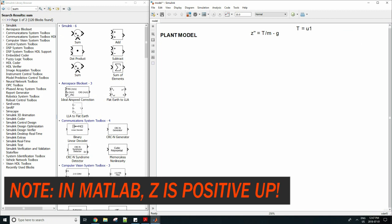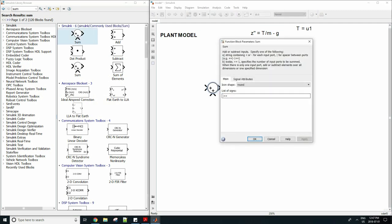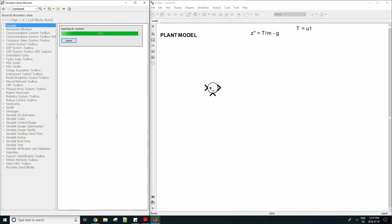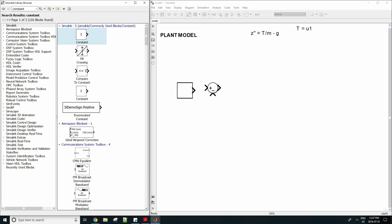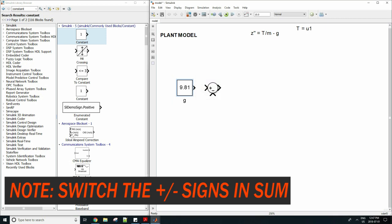We are here in Simulink and we can start modeling our ODE. The first thing we'll do is start with the z double dot function which equals u1 over m minus g. So drag in a sum block and the g will go into the minus sign and the u1 over m will go into the plus sign. Drag in a constant for your gravity which equals 9.81. We can name the block g as shown here and that will go into your minus sign. I did make a mistake there so please watch your signs as you follow along.